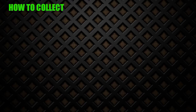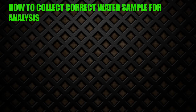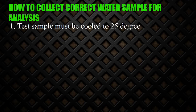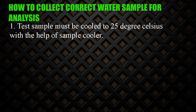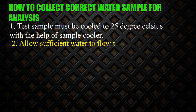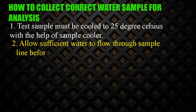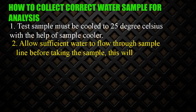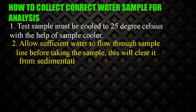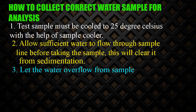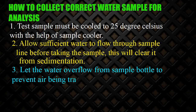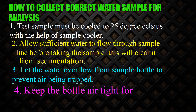How to collect a correct water sample for analysis: (1) The test sample must be cooled to 25 degrees Celsius with the help of a sample cooler. (2) Allow sufficient water to flow through the sample line before taking the sample — this will clear it from sedimentation. (3) Let the water overflow from the sample bottle to prevent air being trapped.